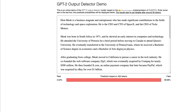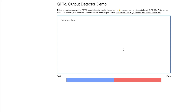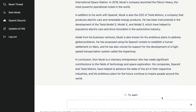One thing to keep in mind is that the underlying model used by this web application does not use ChatGPT output — it uses GPT-2 output. Even so, it performs quite well. Let's try another live example to further validate.